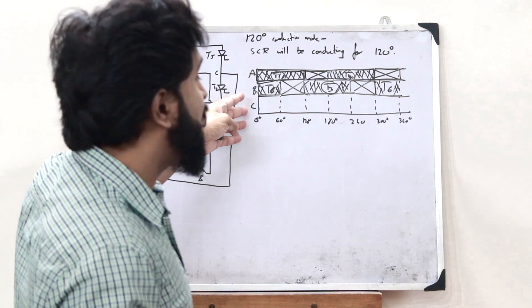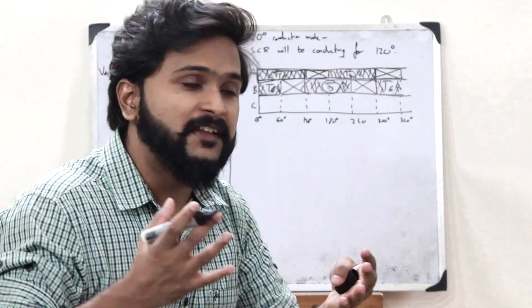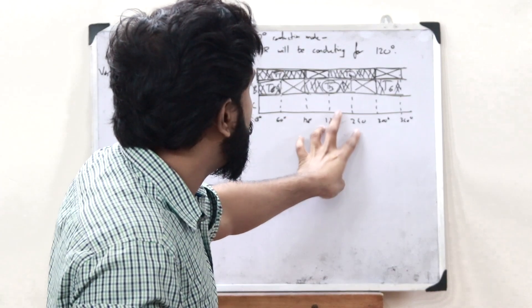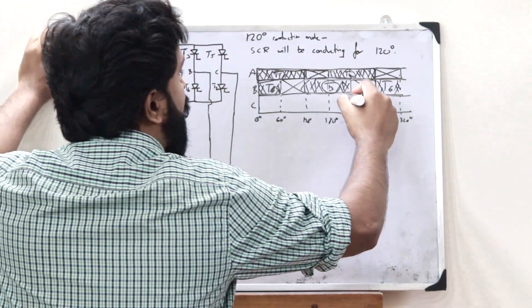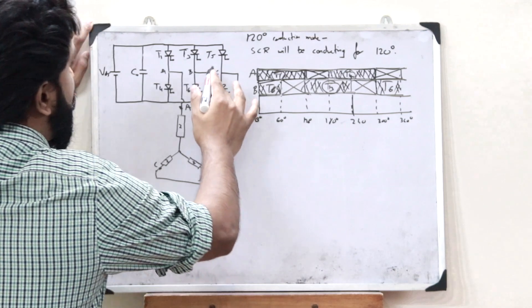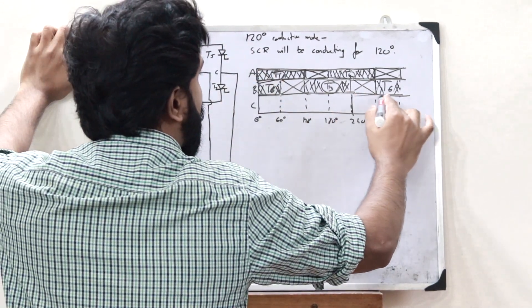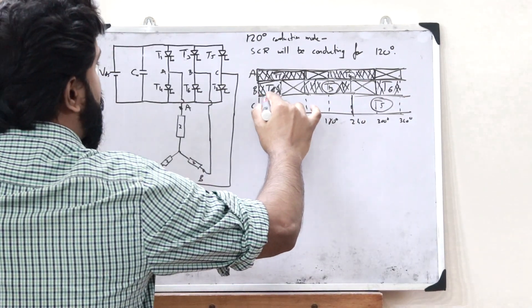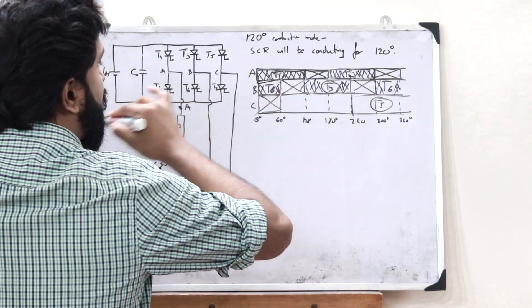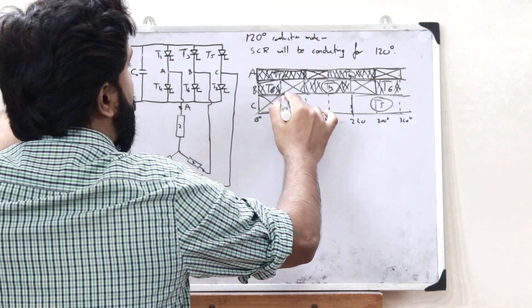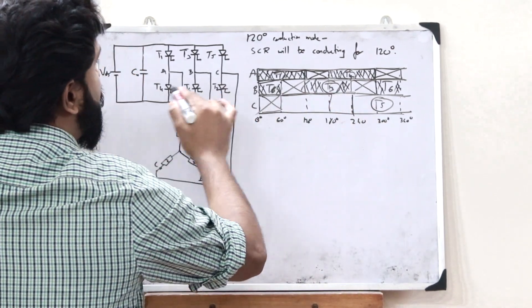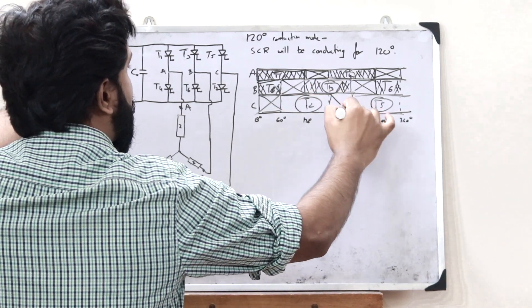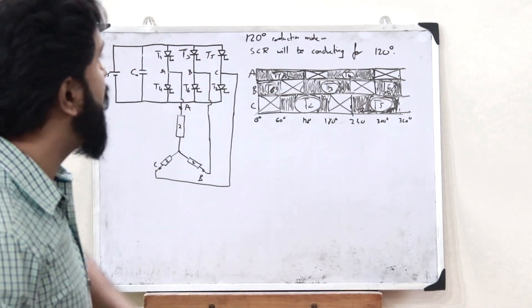For the third phase C, it is at a phase difference of 240 degrees with the first phase. Switch T5 is turned on first for 120 degrees, and for the next 60 degrees nothing is on. Then for the next 120 degrees, switch T2 is turned on, followed by 60 degrees with nothing turned on. This shows us which switches are turned on and when.